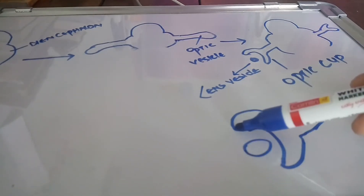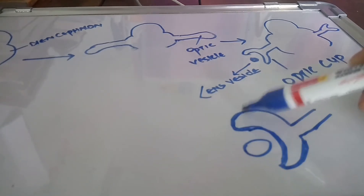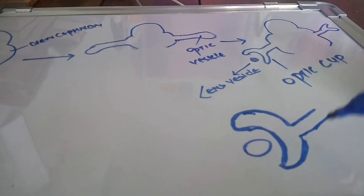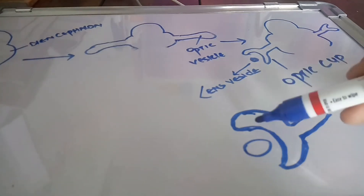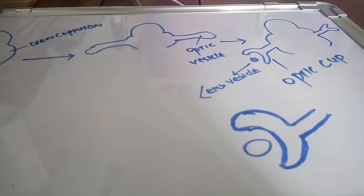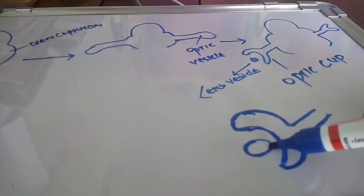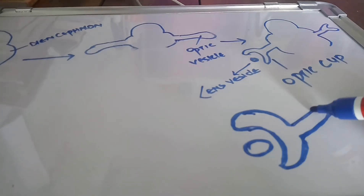The optic cup — its inner and outer layers — develops into the inner and outer retina. The inner layer contains the neuronal layer with rods and cones, and the outer layer develops into the outer layer of the retina. The lens vesicles develop into the lens.